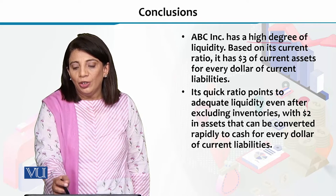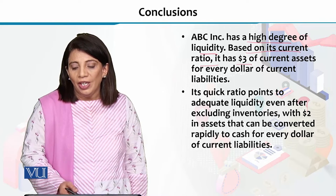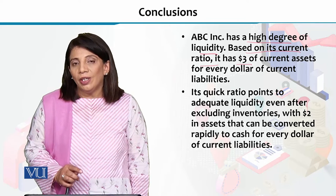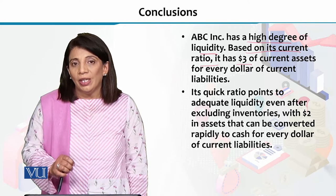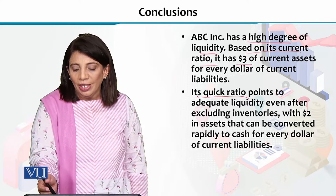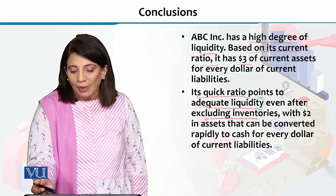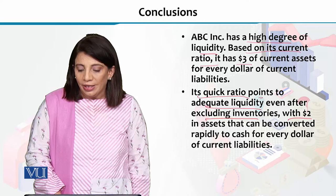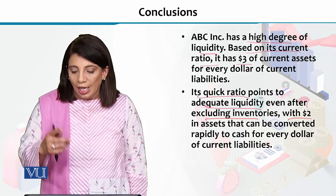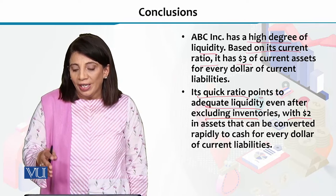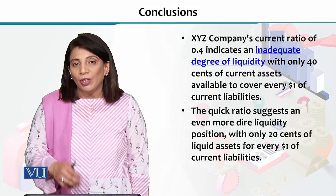Comparing the two companies, ABC Incorporation has greater liquidity compared to XYZ. ABC's current ratio of 3 means that for every $1 of liability, it has $3 available — indicating it is a financially strong and stable company. Its quick ratio shows adequate liquidity even after excluding inventories: for every $1 of current liability, ABC has $2 in immediately convertible assets available.